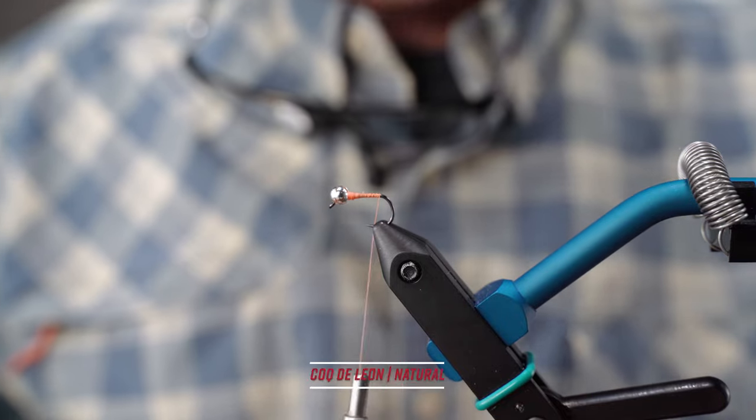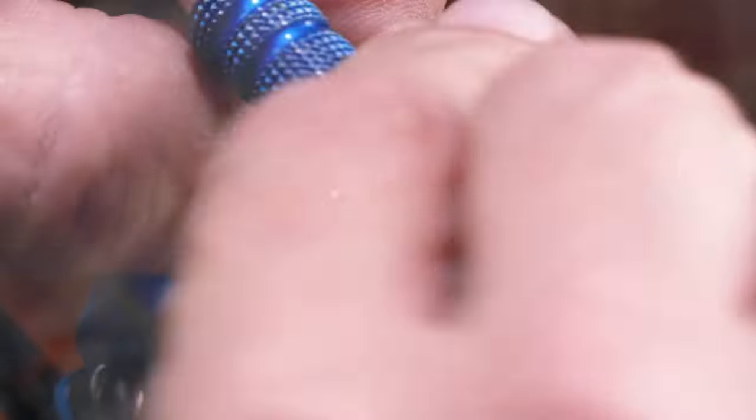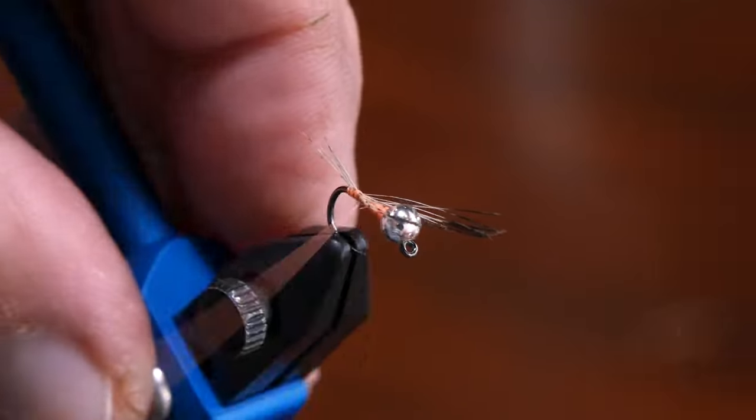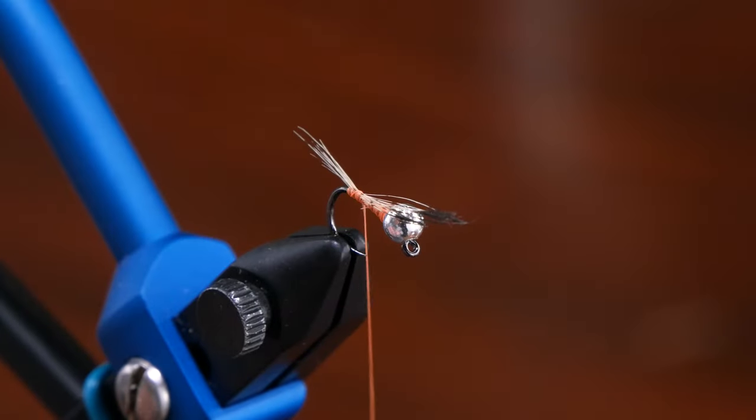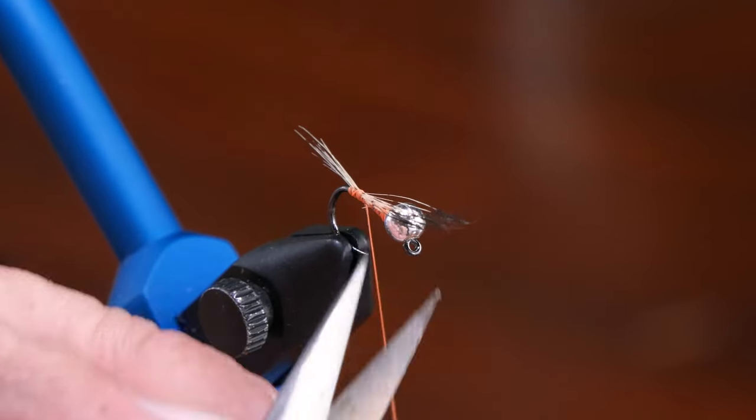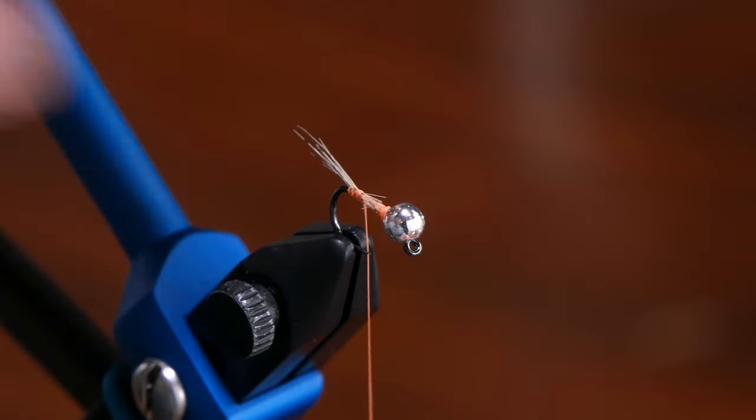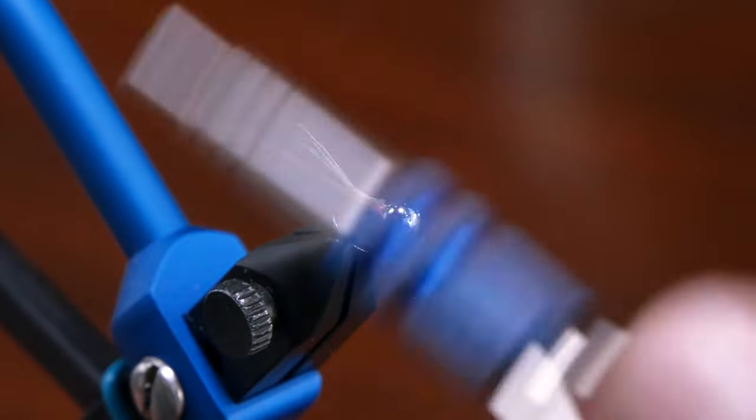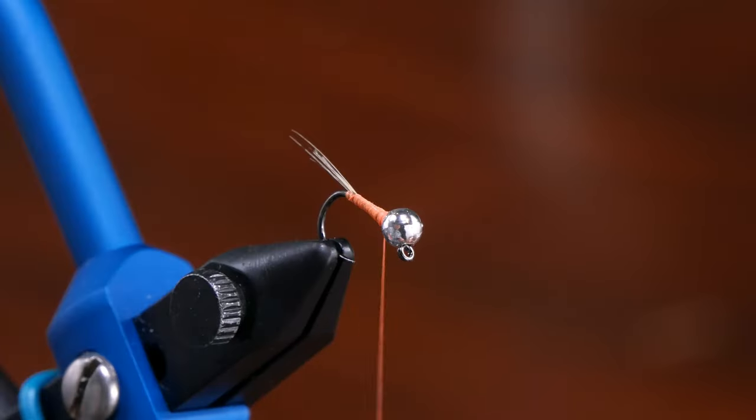We're going to start off with some CDL, Coq de Leon, a beautifully speckled UV feather. I dig a pinch wrap in these situations because I can control what's going on with that feather. When you trim this out, try and trim in front of the collar so you don't build too much up into that. We're going to do some wraps forward and stop just shy of that. Then we're tied in and ready to go.